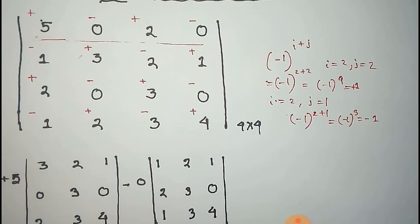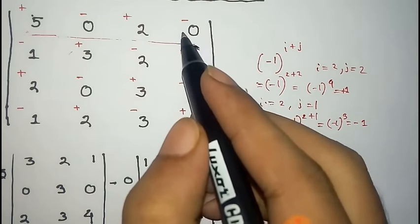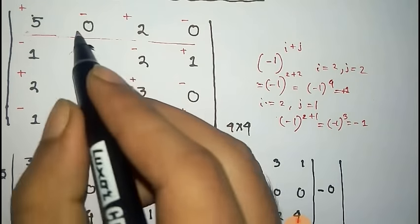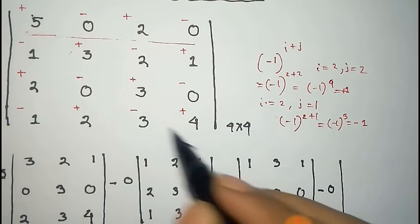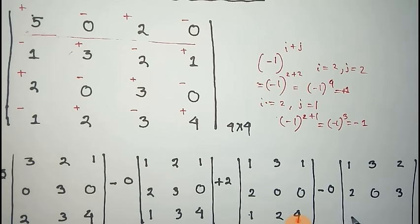For element 2, the sign is plus, so we write plus 2. Cancelling the row and column gives the remaining determinant: 1, 3, 1 in the first row; 2, 0, 0 in the second row; 0, 1, 2, 4. For the next zero, we write minus zero and cancel the row and column, giving the determinant: 3, 2, 2; 2, 2, 0; 3, and 1, 2, 3.